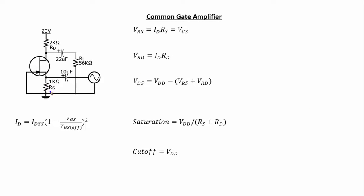Here is the circuit we're going to analyze and then build and test. The input from our signal source goes right to the source of our JFET. The signal comes out of the drain. We're going to be using self-bias, and notice we don't have any resistor on the gate — we don't need it, because the voltage developed on RS with the current going through it generates the necessary voltage.